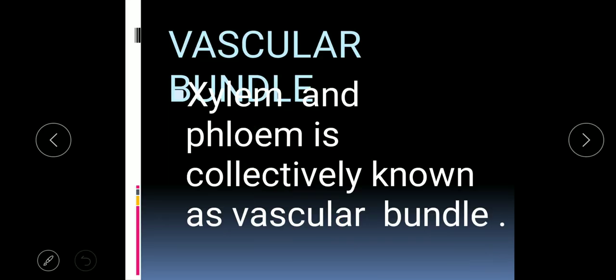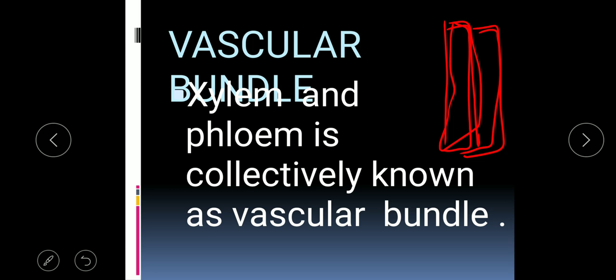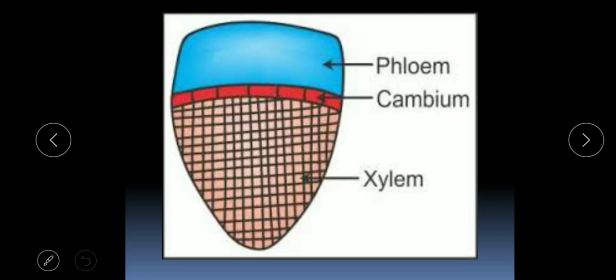Vascular bundle — it is called 'vascular' because it is made up of vessels. Xylem is like a vessel and phloem is like a vessel. It is called a 'bundle' because more than one type of vessels are arranged around each other, forming a bundle — like a bundle of pipes collected together. So xylem and phloem collectively are known as the vascular bundle.